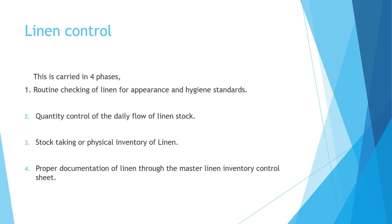If there is a discrepancy from the previous month's figures, it indicates damage done by a guest. Charging for damage depends on the executive housekeeper's decision based on the guest's profile — if the guest is a VIP or a regular, the charge may be waived. The linen is then discarded and entered into a damaged or discarded register with details including room number, date, guest name, and reason for discarding, giving a clear picture of linen discarded over six months or a year.